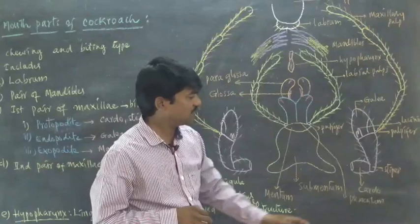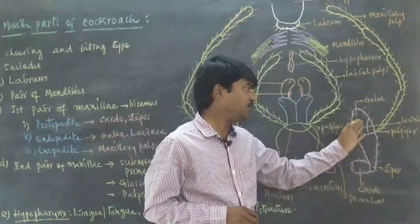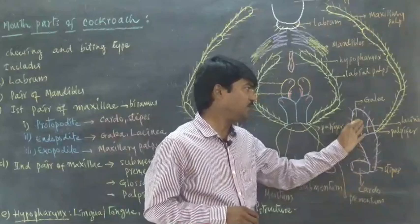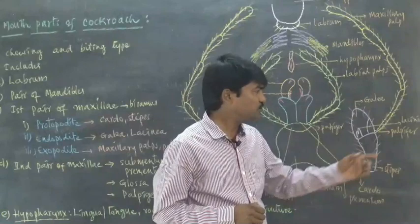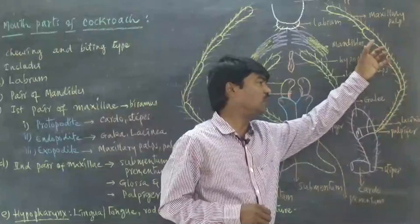and the middle or inner part is known as endopodite, and the remaining part is known as exopodite. The protopodite is composed of cardo and stipes. Just above that, endopodite is present, and it includes two structures: hood-like galea and pincer-like lacinia are present. The remaining part is exopodite.